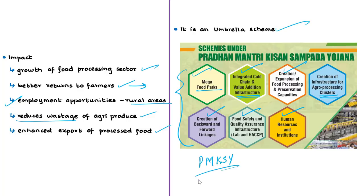To boost food processing industries, the inter-ministerial approval committee has sanctioned 10 food processing projects across the country, eight of which are in Tamil Nadu. In this discussion we saw about the Pradhan Mantri Kisan Sampada Yojana and its objectives.